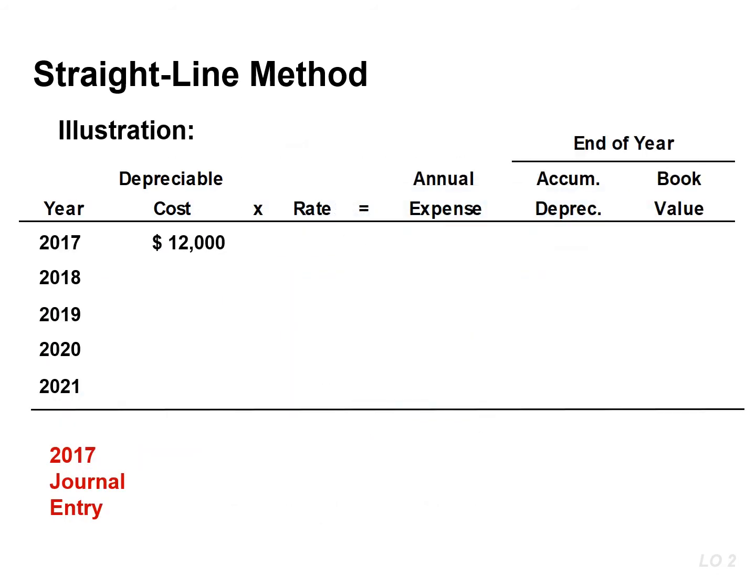Another approach is to compute an annual rate. In this example, the rate is 20%, and this is found by dividing the useful life into 1. The company applies this rate to the depreciable cost of $12,000 to arrive at depreciation expense of $2,400.